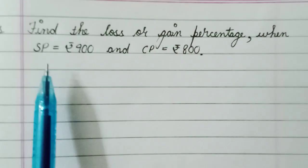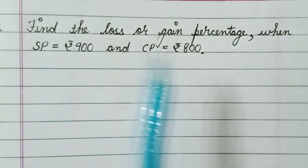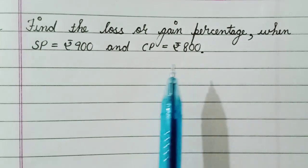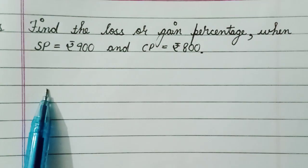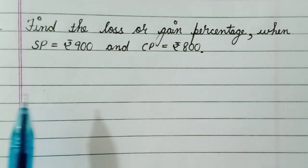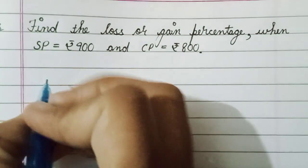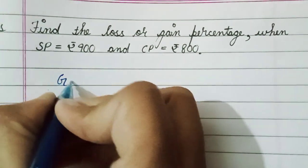If SP is greater than CP, then it is gain. It means we have to find the gain. As we know, the formula of gain is SP minus CP.